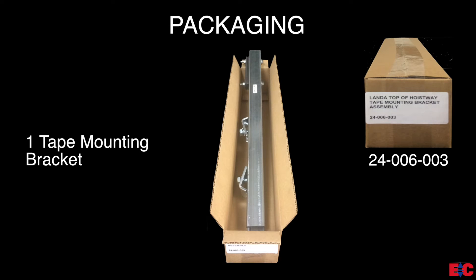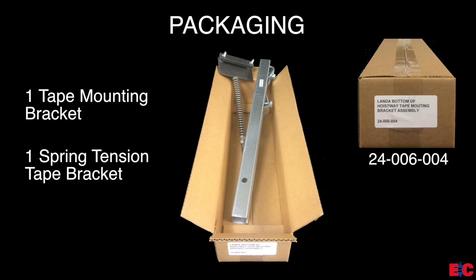The next box is 24-006-003, which contains one tape mounting bracket for the top of the hoist way. 24-006-004 contains one tape mounting bracket for the bottom of the hoist way, and one spring tension bracket for securing the tape at the bottom of the hoist way.